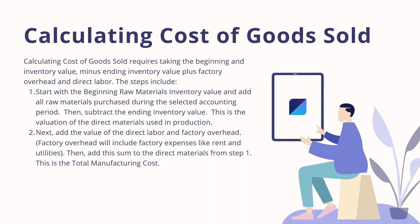Step 2: Next, add the value of the direct labor and factory overhead. Factory overhead will include factory expenses like rent and utilities. Then add this sum to the direct materials from step 1. This is the total manufacturing costs.